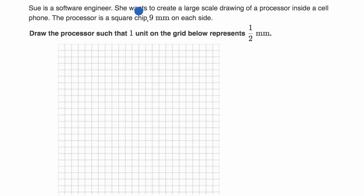Sue is a software engineer. She wants to create a large scale drawing of a processor inside a cell phone. The processor is a square chip, nine millimeters on each side. Draw the processor such that one unit on the grid below represents one half of a millimeter.